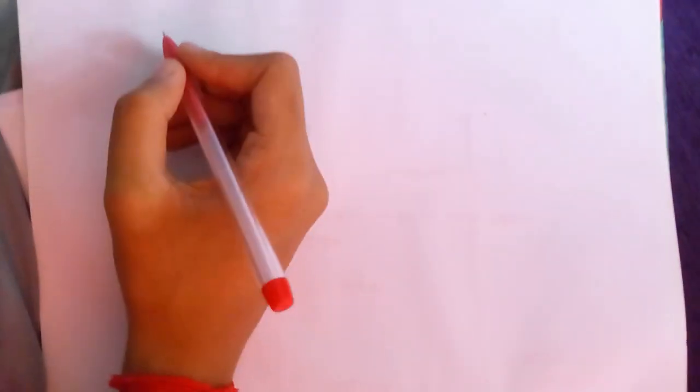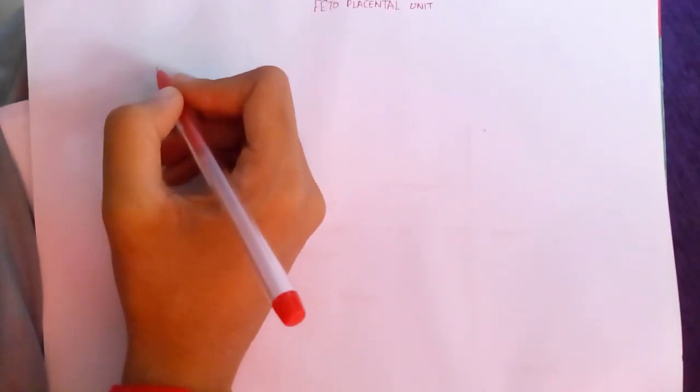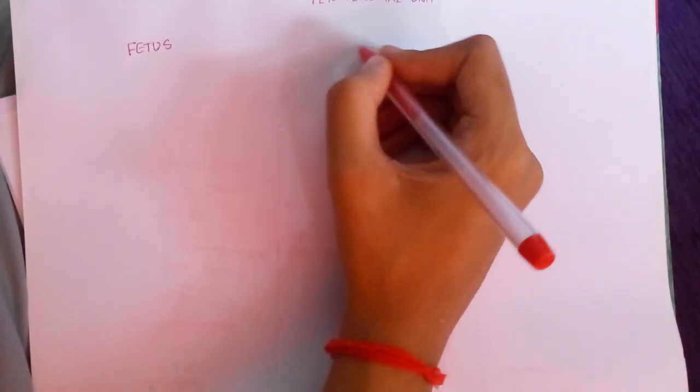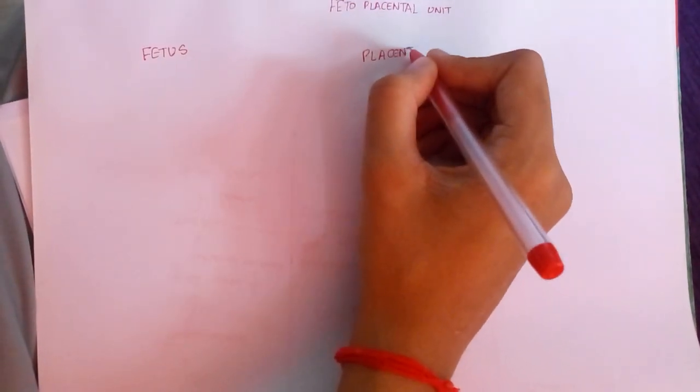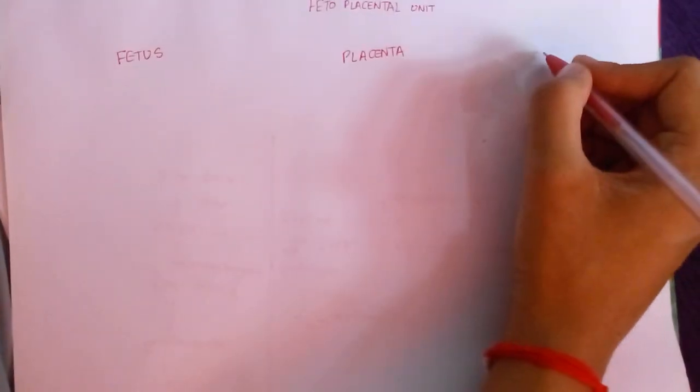The fetoplacental unit, or the maternal-fetoplacental unit as it is called, consists of three components: the fetus, the placenta, and the mother.